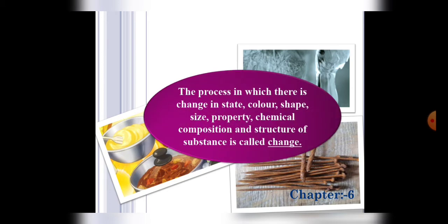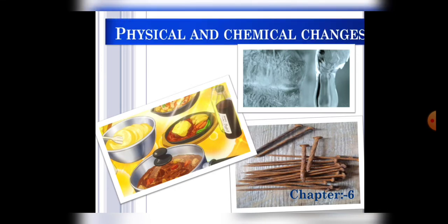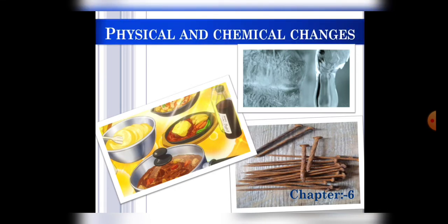So students, the process in which there is a change in state, color, shape, size, property, chemical composition, and structure of substance is called change. And this change is categorized as two types: physical and chemical changes, which is the title of today's chapter.